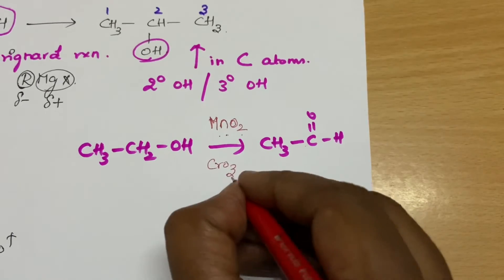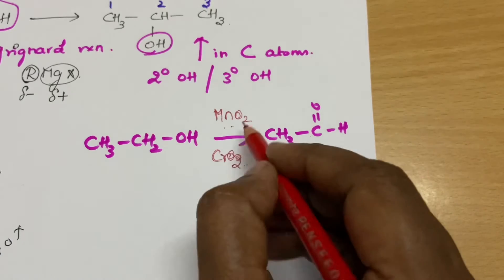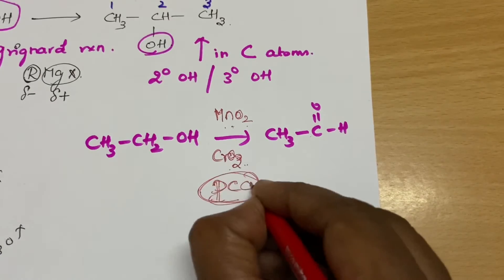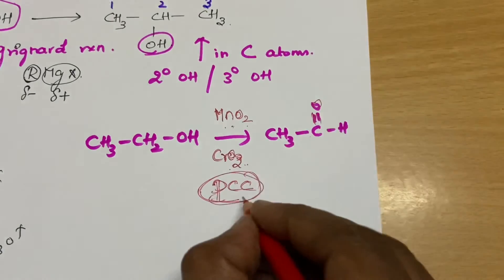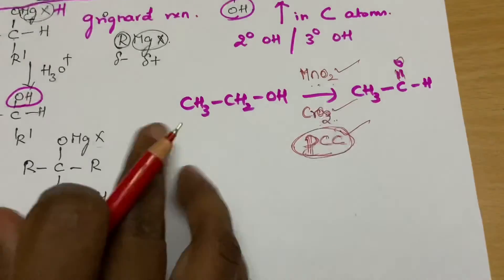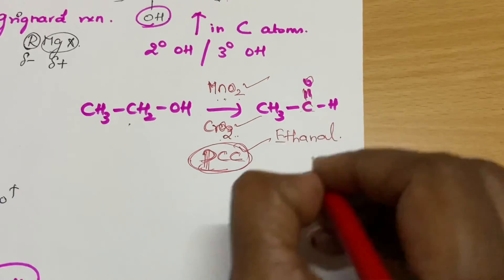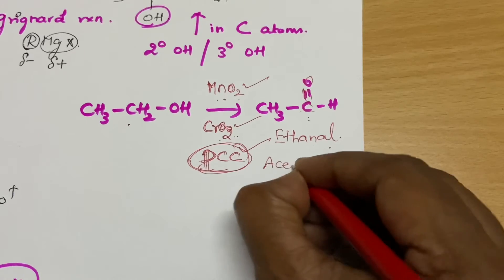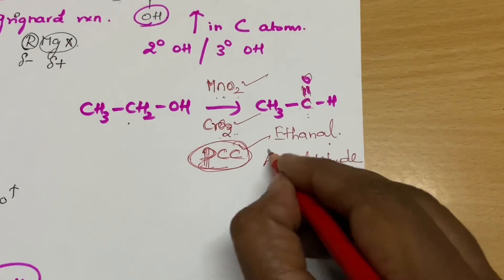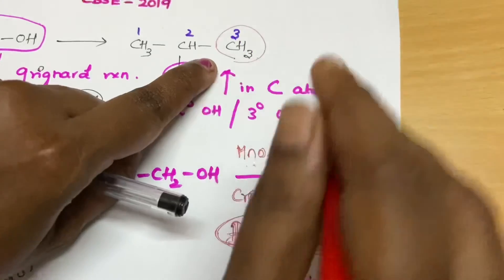Mild oxidizing reagents are also an important one-word answer question. The options are MnO₂, CrO₃, or PCC. PCC — pyridinium chlorochromate — is very important and does the process very neatly. So first, convert ethanol to ethanal using one of these reagents. Ethanal is the IUPAC name; the common name is acetaldehyde. You need to remember both names.